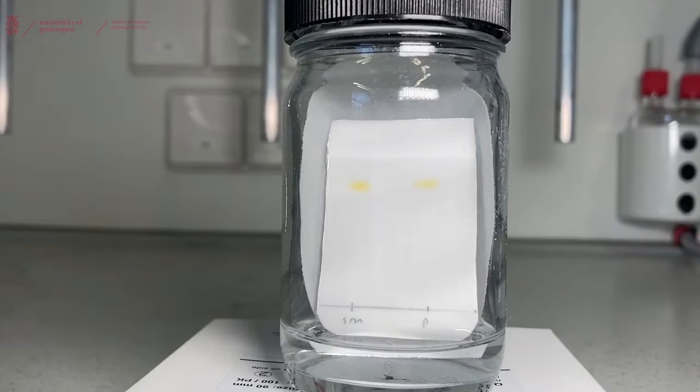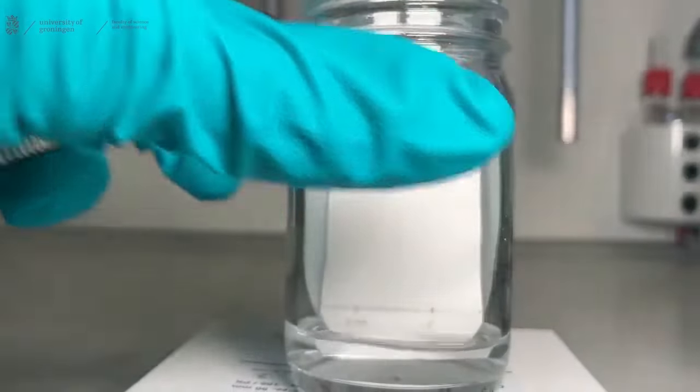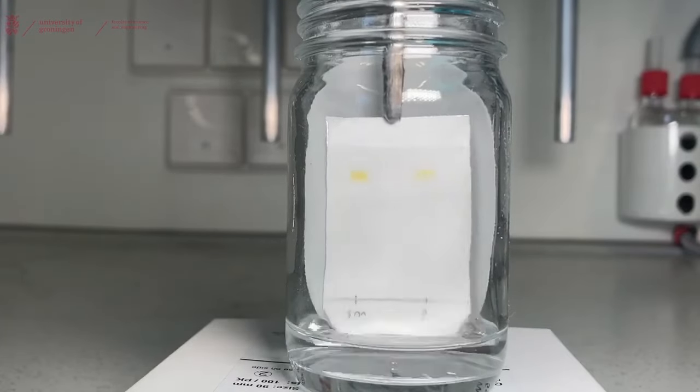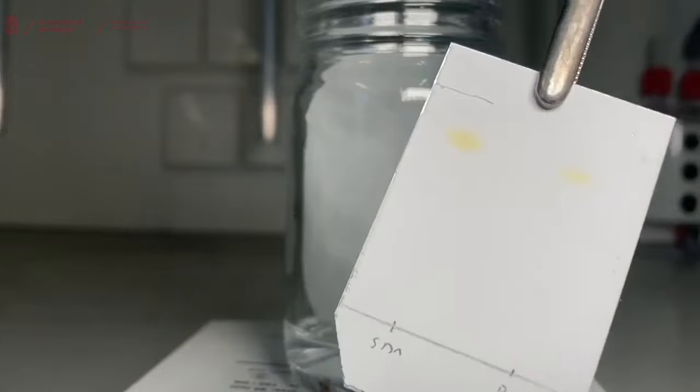We're almost at the end of our TLC plate. So we'll open the jar and remove the TLC plate from the jar using our tweezers. And draw a line at where the solvent reached the top. Now we just have to wait until the solvent evaporates.